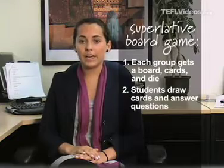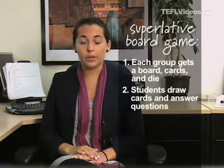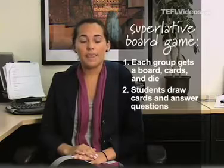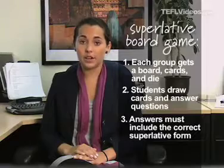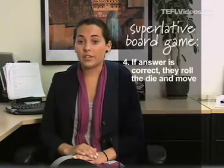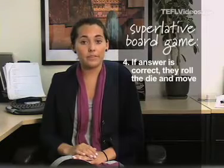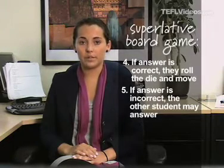Students take turns picking a card and answering the question in it. For example, who is your closest friend? They must use a complete sentence and include the correct form of the superlative in their answer — for example, my closest friend is Anna. If their answer is correct, they get to roll the die and move. If not, they stay in their place and the other student or team tries to answer correctly.